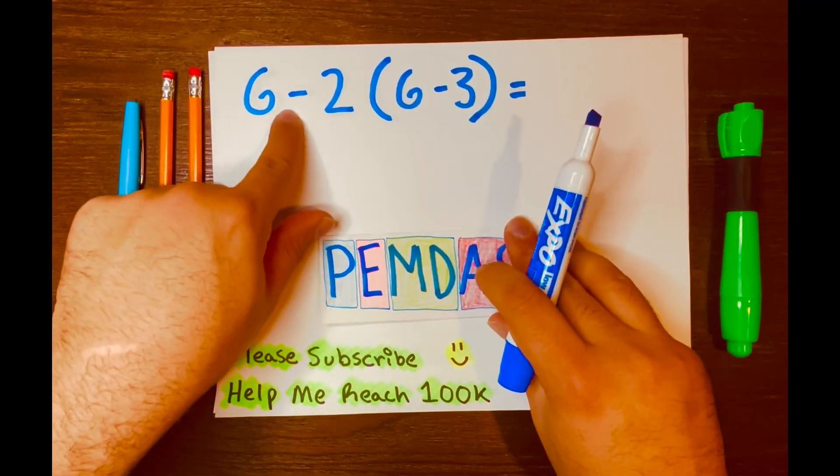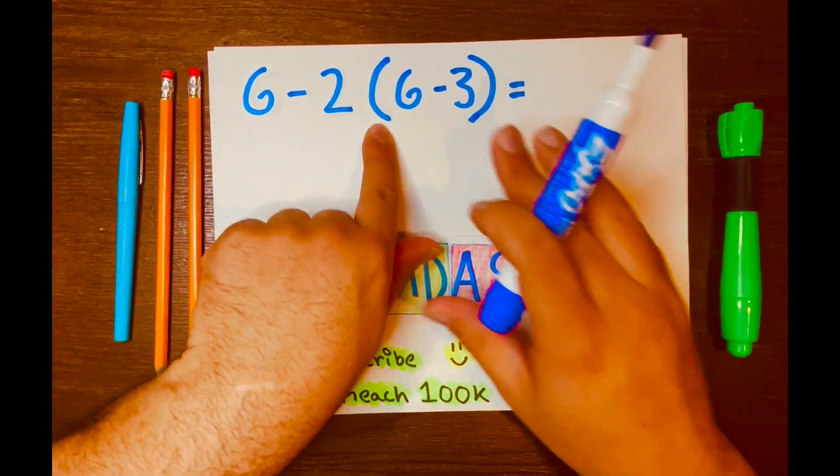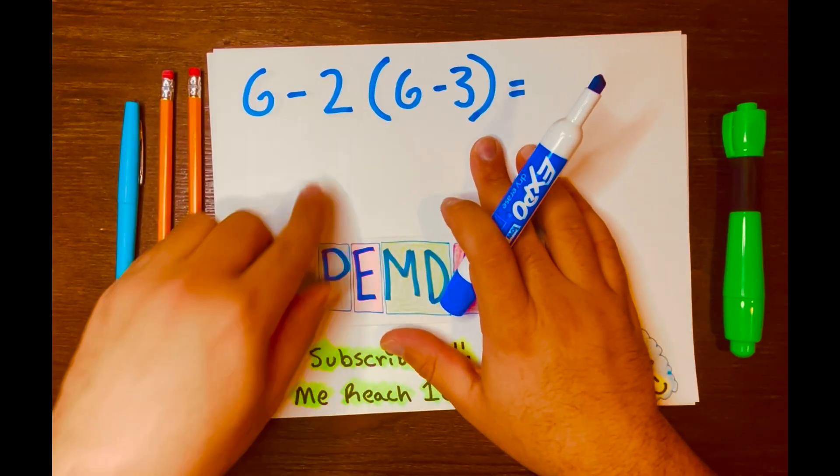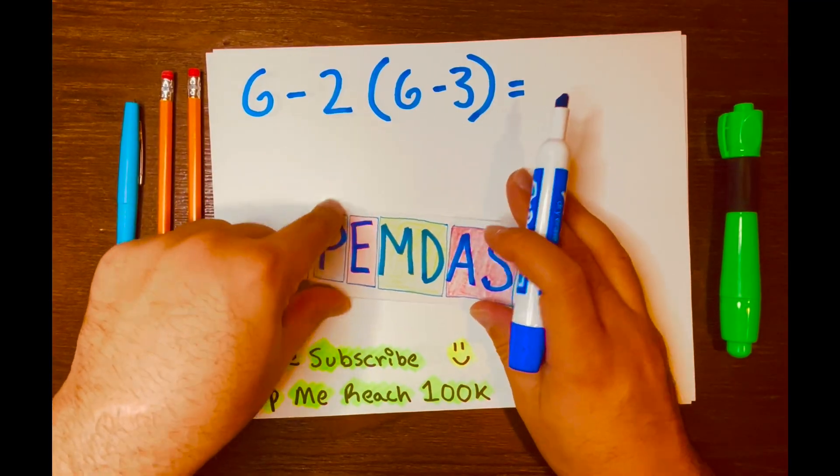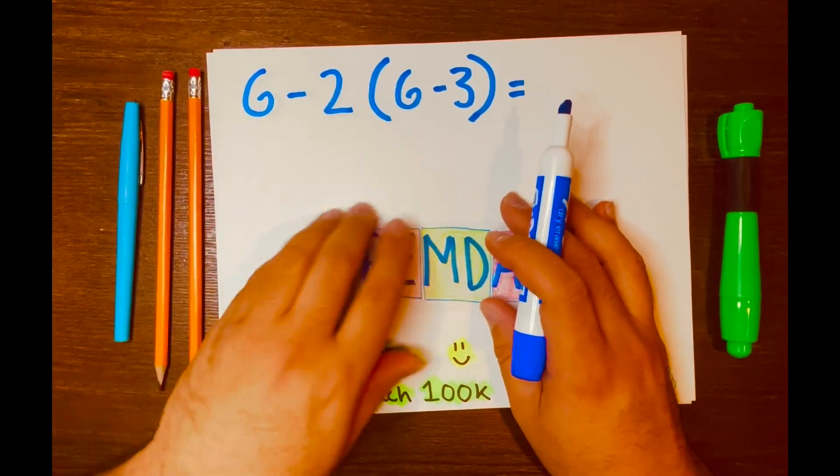I do see subtraction. I do see parentheses. I do see some multiplication. Maybe we can multiply 2 times 6. But let's go ahead and use PEMDAS to help us solve this math problem.